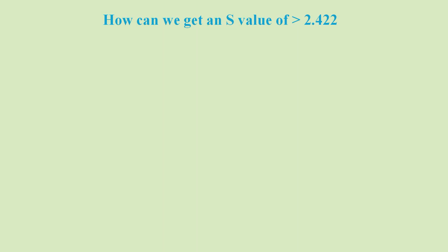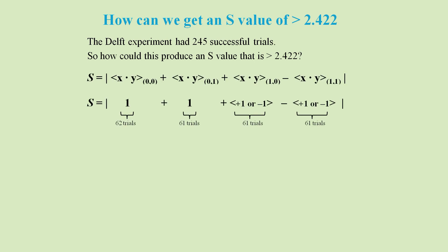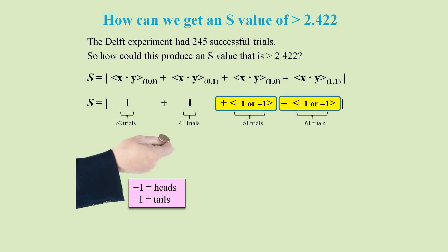If we match the number of trials performed at Delft, which was only 245, then could our coin flip game match the Delft result? Say the contributing trials are distributed like this.